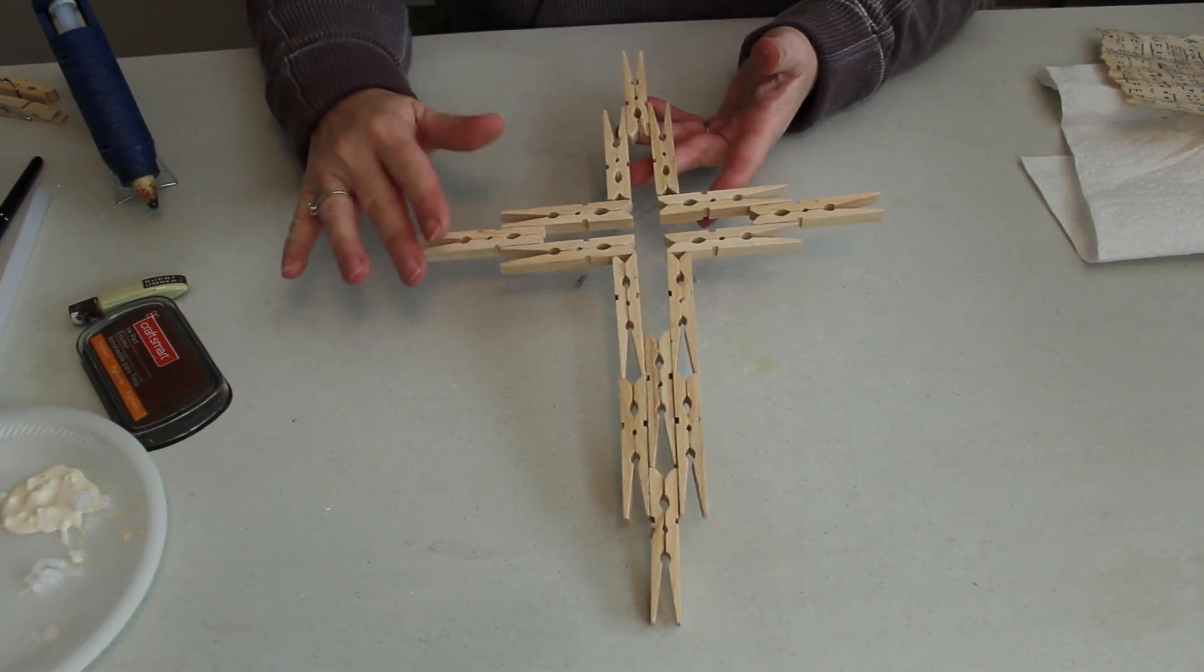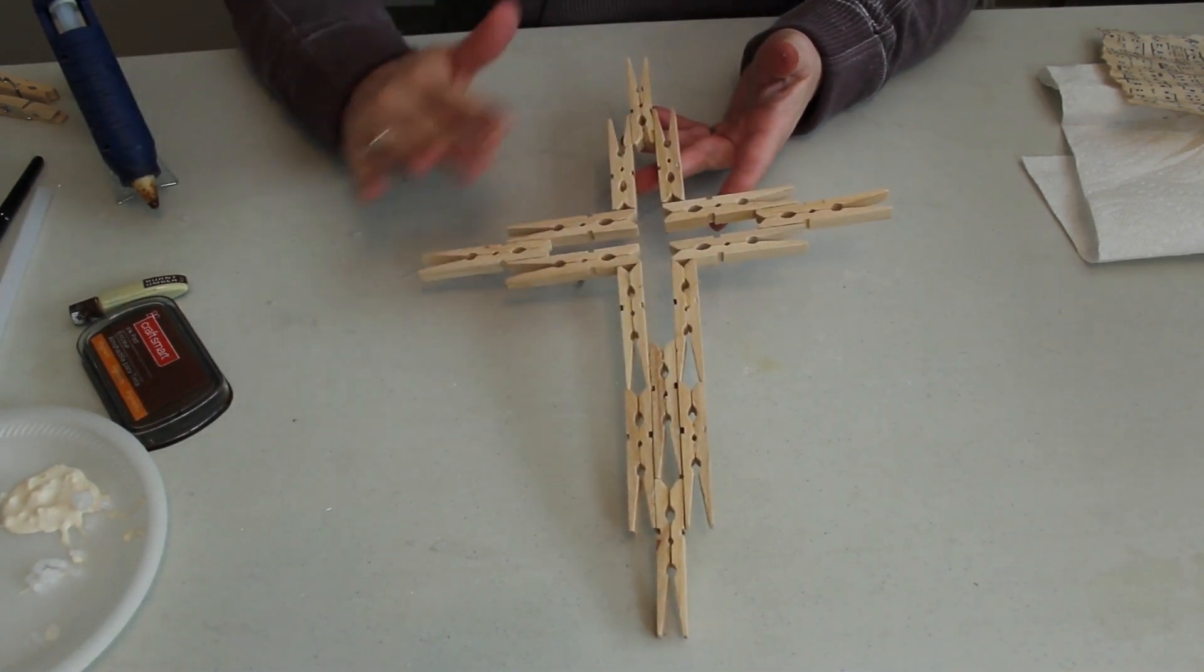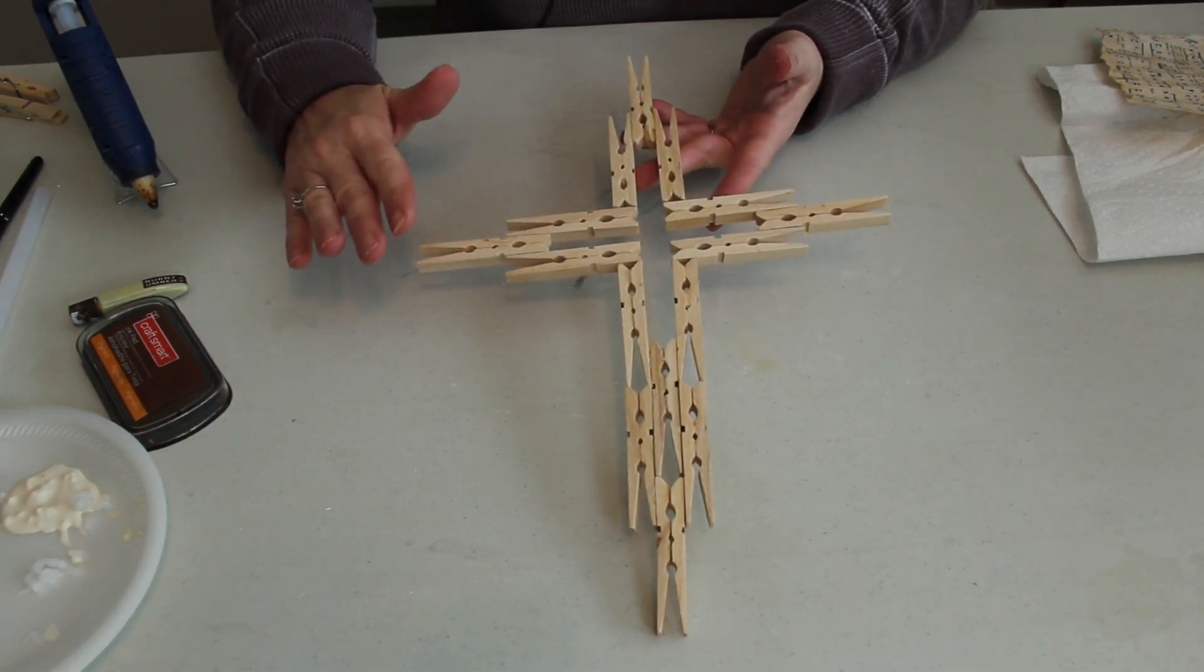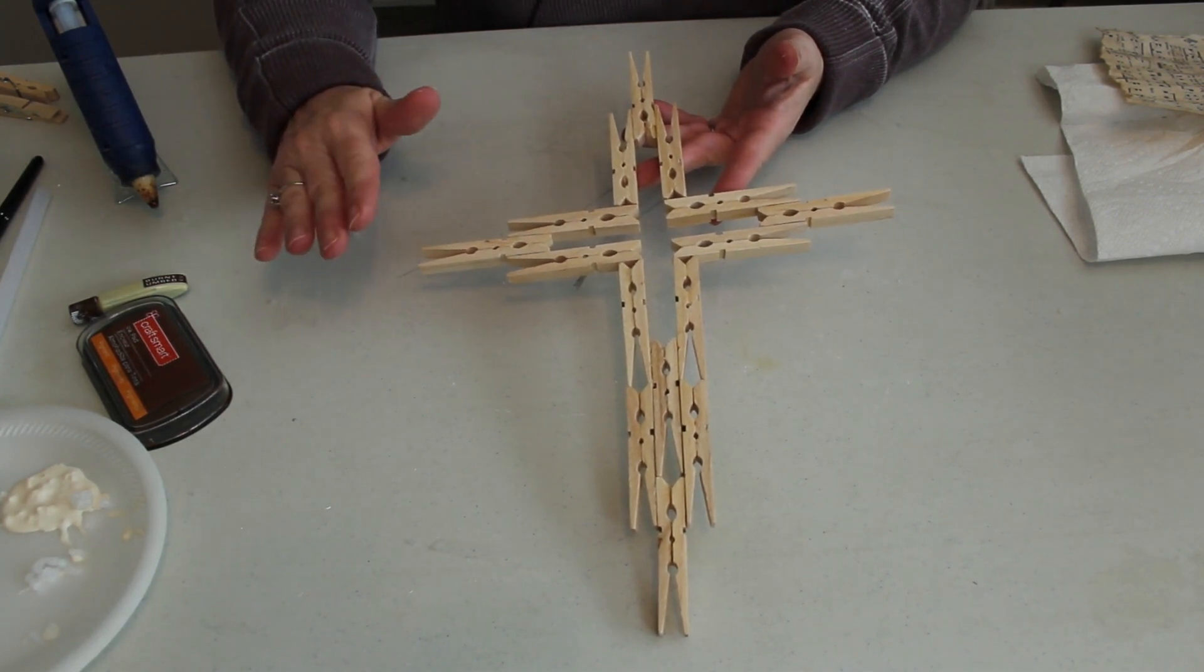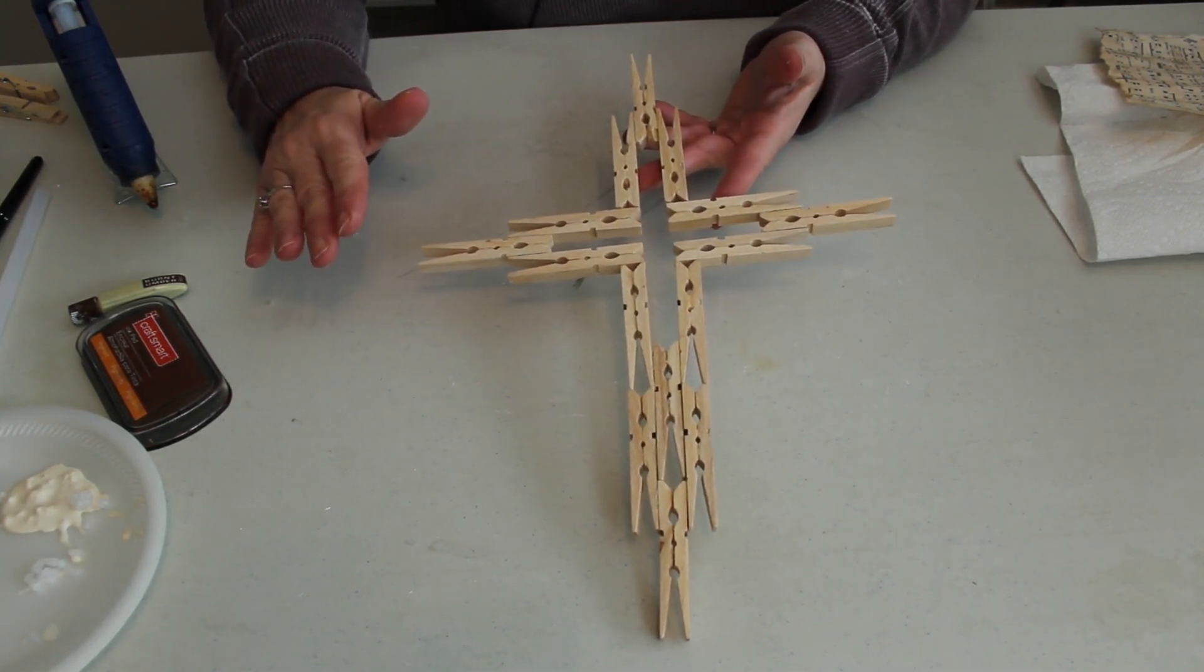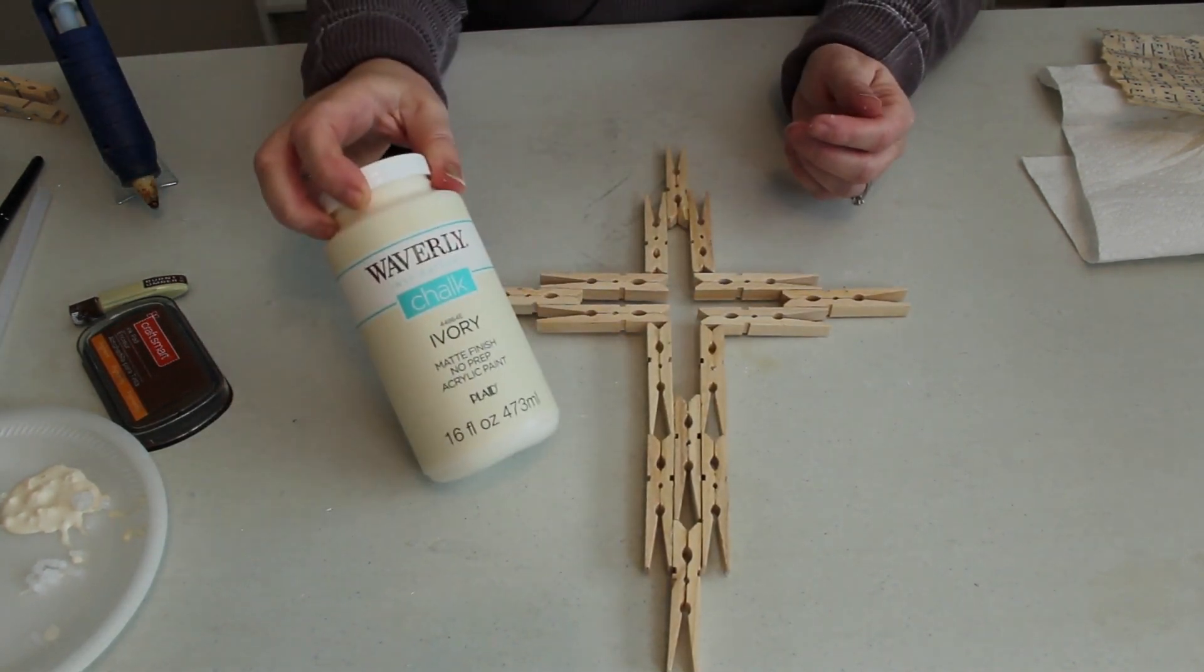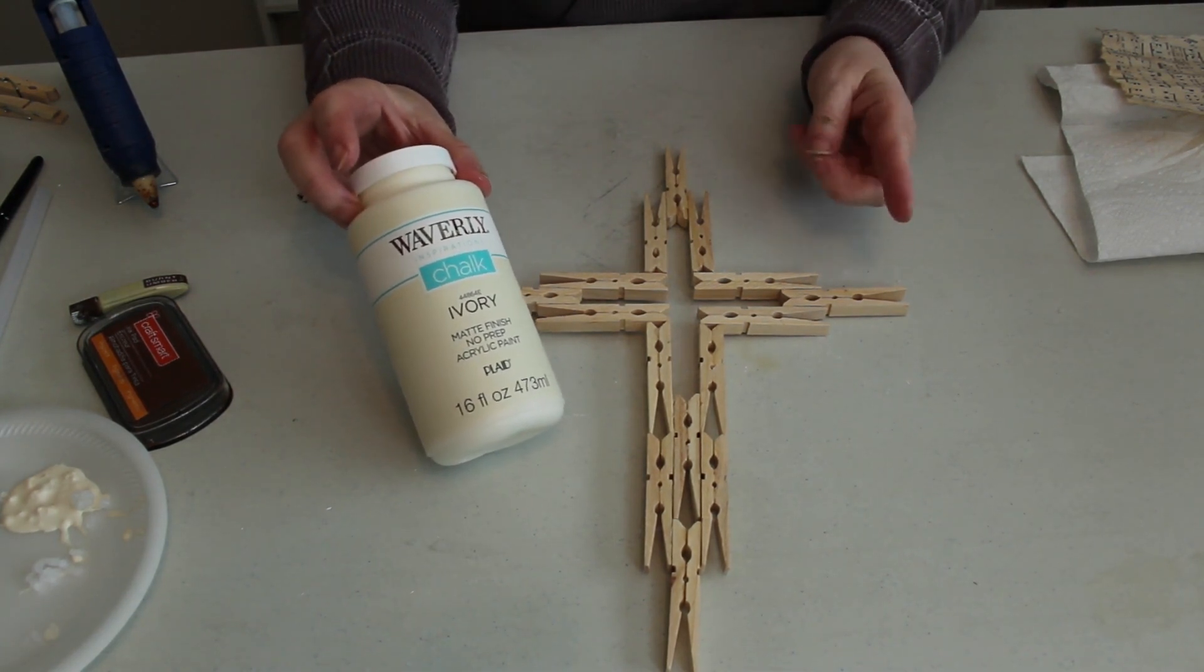Now I was going to take this outside and use my blow torch and torch over the wood and give it that burnt look to give it a rustic look but it's still really windy outside. We had bad storms last night and it's still too windy for me to be using a blow torch. So I'm going to take my ivory Waverly chalk paint. I'm almost out of the white so it's I guess it could be a good thing.